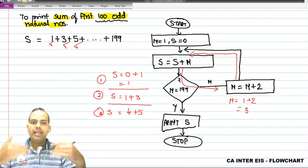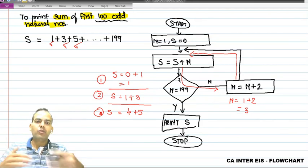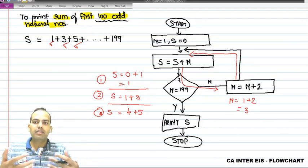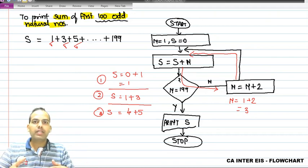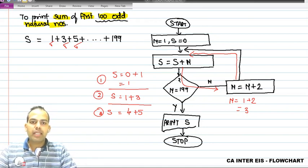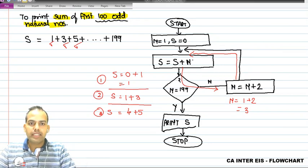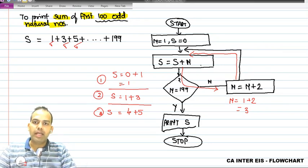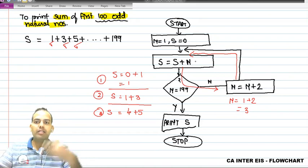Same way we can, for a practice purpose, we can take it to print a sum of first 100 odd numbers, first 50 odd numbers. You can print first 500 natural numbers. You can print square of first 100 natural numbers. When you say square of first 100 natural numbers, you have to just take care - square means you have to n into n. You will change the program to n into n, so automatically it will get squared.